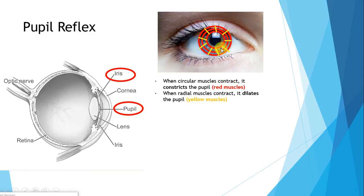When the circular muscles, the red muscles, contract, it constricts the pupil, making it smaller. The radial muscles, the yellow muscles, when they contract, they dilate the pupil. You can think of it as pulling on the pupil and making it bigger when the yellow muscles contract. When the red muscles contract, it contracts inwards to make the pupils smaller.